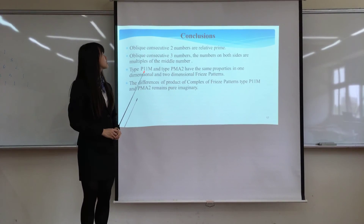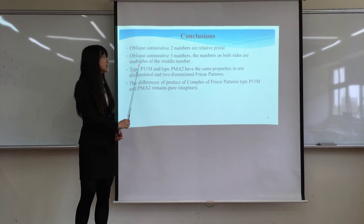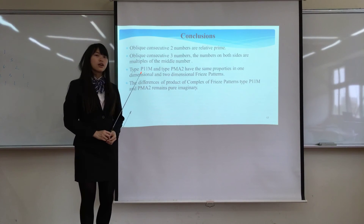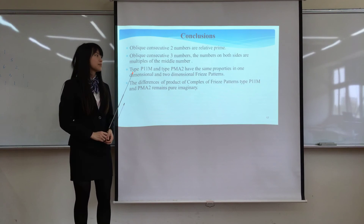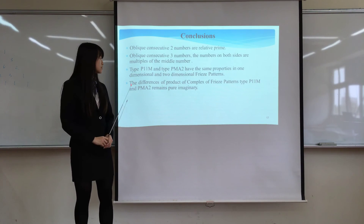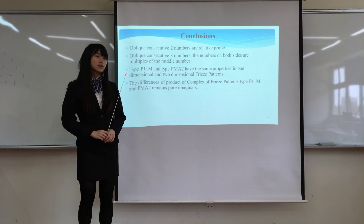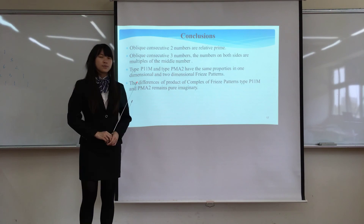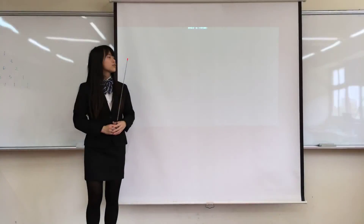This is our conclusion. First, arbitrary consecutive two numbers are coprime. Second, for arbitrary consecutive three numbers, the numbers on both sides are multiples of the central one. Third, pfn3 and pfn2 have the same properties in the one-dimensional and two-dimensional ffn3 scatters. Fourth, the differences of the products of complex ffn3 scatters of type pfn2 remain pure imaginary. These are the references. Thank you for your attention.